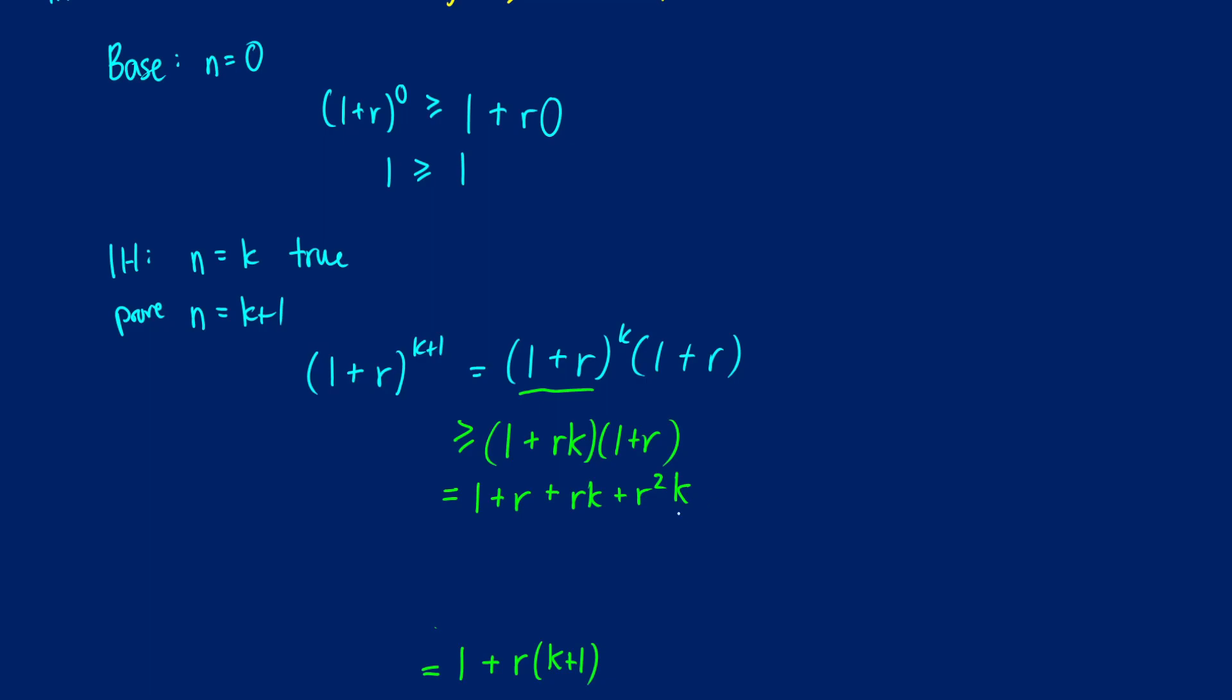We're going to notice something about this r squared k. We don't have any r squareds in our final solution so we don't really want to deal with this. But what do we know about this? We know that r squared times k has to be at least 0 or greater. That's because when we square r it's going to be positive, and k in this case is going to be at least 0.